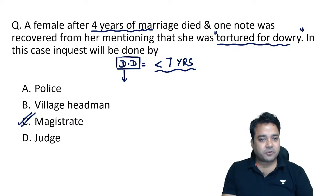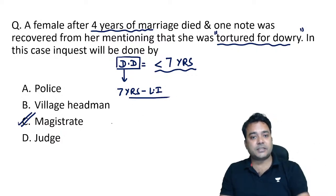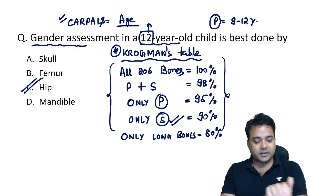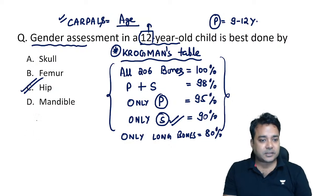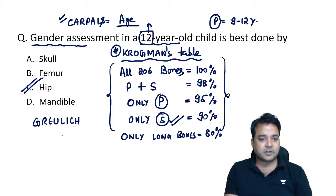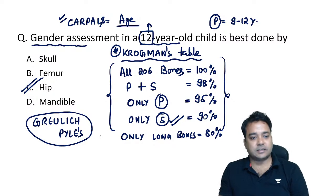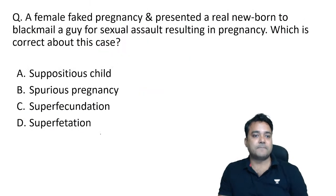The minimum punishment for dowry death is seven years; maximum is life imprisonment. For age estimation in children, the best method is left hand and wrist X-ray — known as the Greulich-Pyle method (derived by Greulich and Pyle). In this method, left hand and wrist X-ray is taken, examining carpals, lower end of radius, and related structures for age estimation.